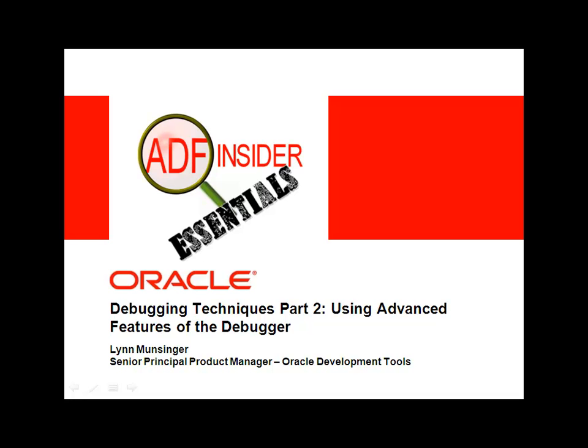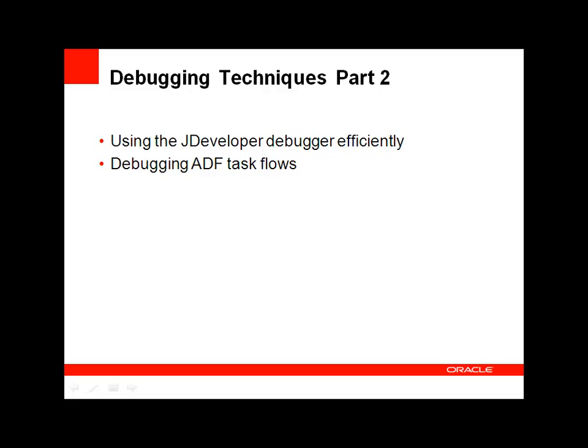In this demonstration, you will see how to debug applications using the more advanced features of the JDeveloper debugger. This presentation is part of a series on debugging techniques. In this second part, I'll use real-world examples to show how to use the capabilities of the JDeveloper debugger to more efficiently debug issues. I'll also show how to debug ADF taskflows using the integrated taskflow debugger.